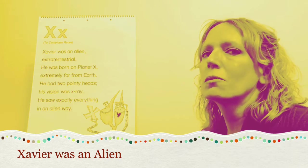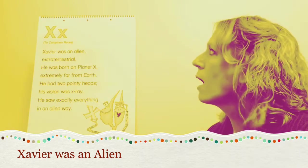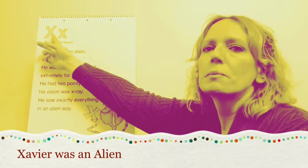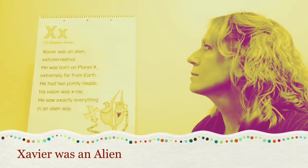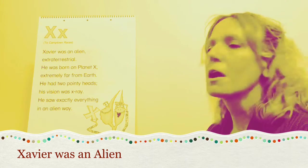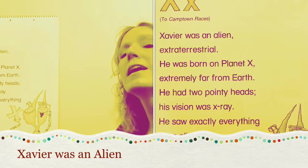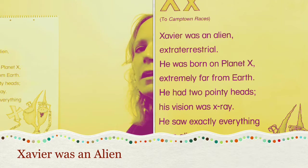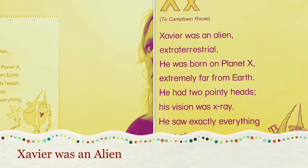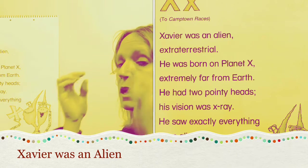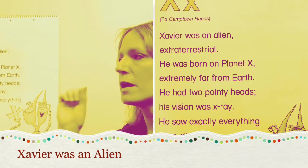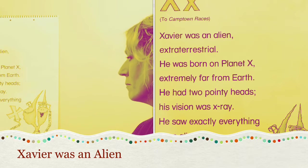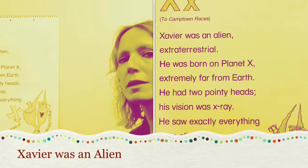All right, even though we're not going to sing all of the letter songs, I have the X song because a lot of my friends like this one too. It is an uppercase X and a lowercase X, and it's sung to the tune of Camptown Races. Are you ready? Xavier was an alien, extraterrestrial. He was born on planet X, extremely far from Earth. He had two pointy heads, his vision was X-ray. He saw exactly everything in an alien way. He has two heads and he's holding an X.